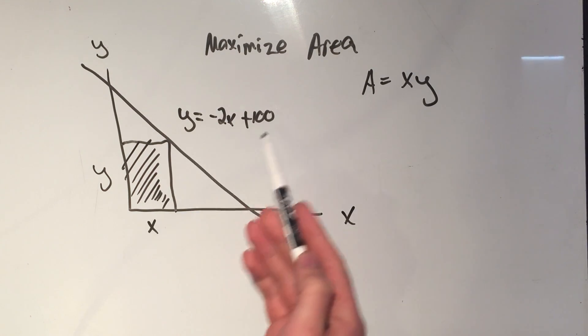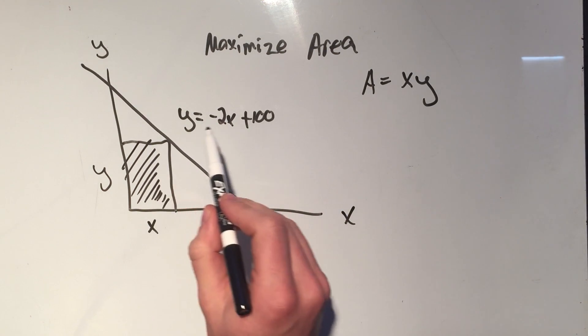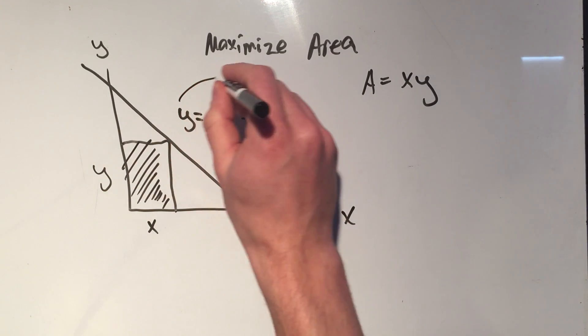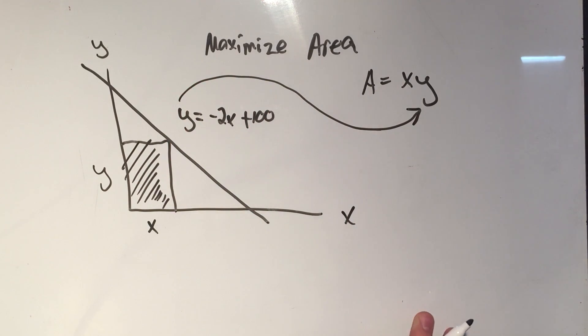And look at that. This one's already solved for us. We already know what y equals. y equals minus 2x plus 100. So I'm just going to plug that y in for this y.